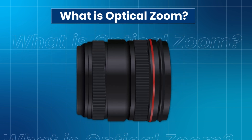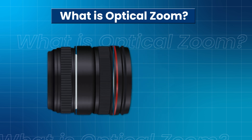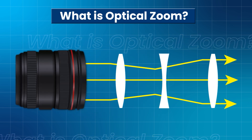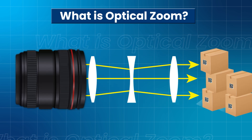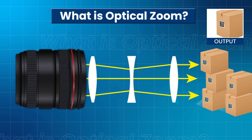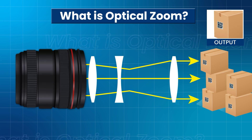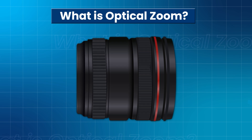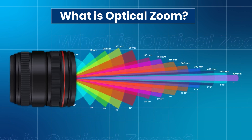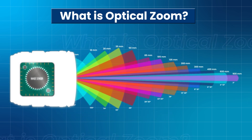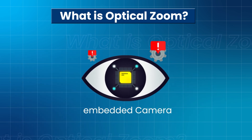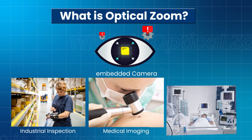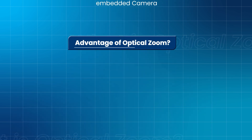Optical zoom is characterized by the physical alteration of the camera lens's focal length. It is achieved through the movement of glass elements within the lens assembly. Changing the distance between these elements allows the camera to zoom in or out on a subject, enabling a variable field of view while maintaining the integrity of the image sensor's resolution. This is critical in embedded camera use cases like industrial inspection, medical imaging, and remote monitoring.